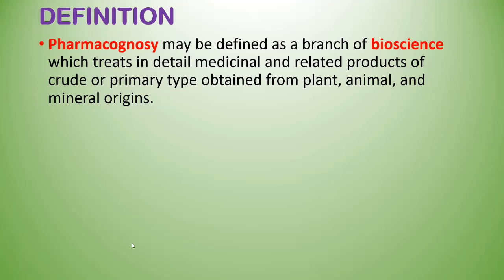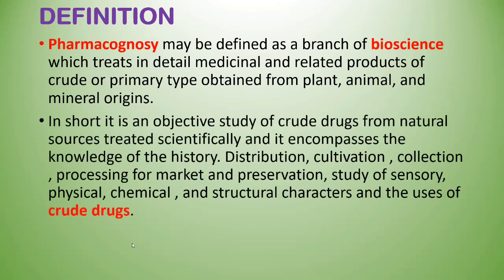Pharmacognosy is a branch of bioscience which treats in detail medicinal and related products of crude and primal type obtained from plant, animal, and mineral sources. In short, it is an objective study of crude drugs from natural sources, treated scientifically. It encompasses the knowledge of history, distribution, cultivation, collection, processing for market and preservation, as well as the study of sensory, physical, chemical and structural characters and the uses of crude drugs.